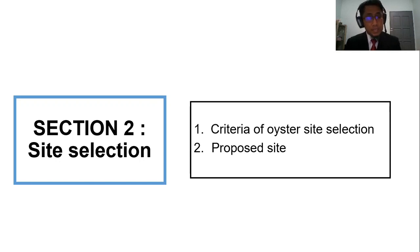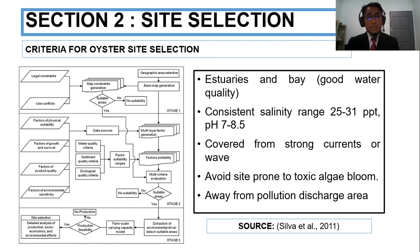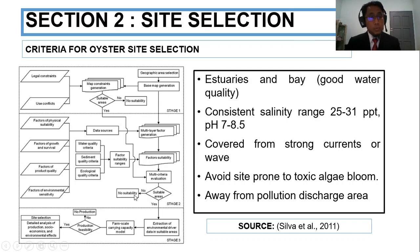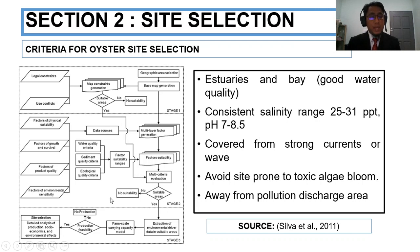Now I go to section two regarding site selection, which consists of criteria for oyster site selection and a proposed site. According to Silver 2011, there are three stages. Stage one is recognizing the area — if the site is suitable, we proceed to stage two. Stage two evaluates physical and substance suitability, factors of growth and survival, product quality, and environmental sensitivity. If not suitable, we stop here.